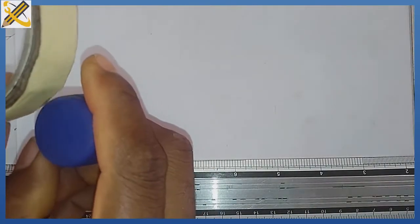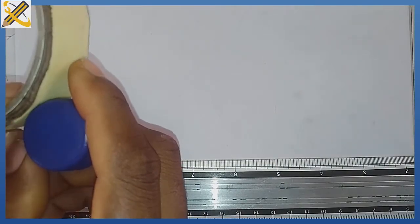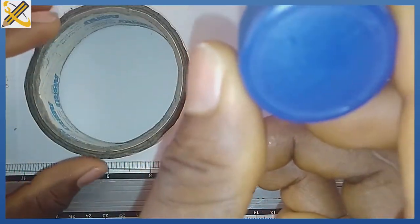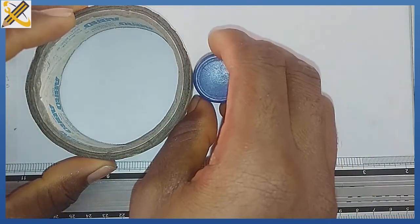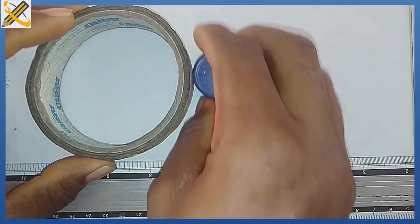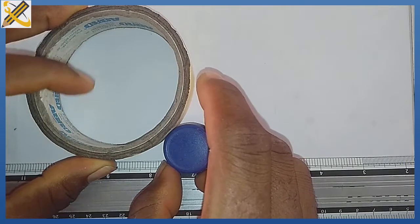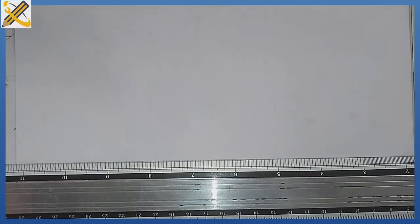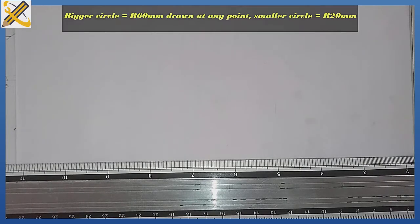Epicycloid refers to the loci of a point made when a circle of smaller diameter rotates outside the circumference of a circle of bigger diameter. For today's class, the diameter for the bigger circle is going to be 120 mm, while for the smaller circle it is going to be 40 mm.